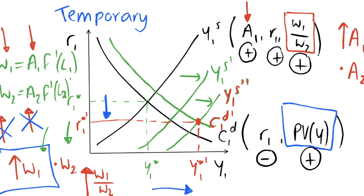It's worth highlighting that we're talking about output Y1, output in period 1. A temporary shock increases Y1 more than a permanent shock does. You might think a permanent shock should be better for output — and it is overall — because with a permanent shock output also increases in period 2. But a temporary shock increases output in period 1 more because of the additional intertemporal substitution. In period 2 of a temporary shock there is no productivity increase, so make sure you realize we're talking only about period 1 here.